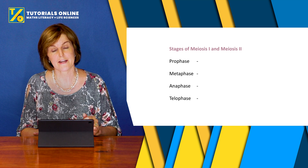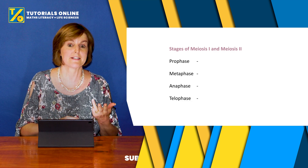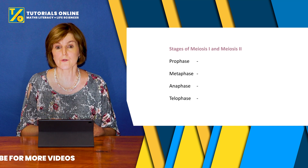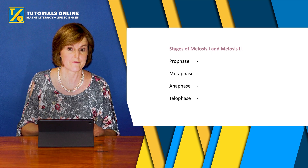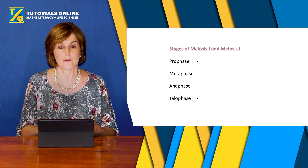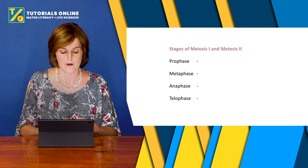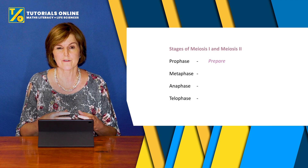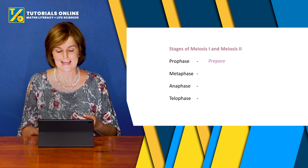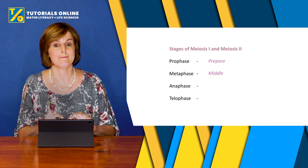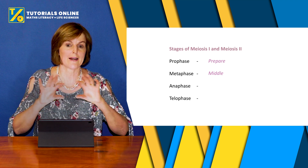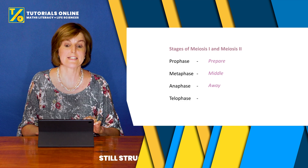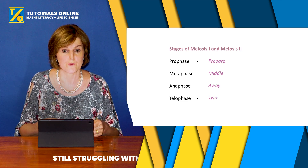Meiosis I has prophase I, metaphase I, anaphase I, and telophase I. Meiosis II likewise has prophase II, metaphase II, anaphase II, and telophase II. Prophase is the preparation stage in both. Metaphase — M for middle — the chromosomes line up on the equator. Anaphase — A for away — the chromosomes or chromatids move to opposite poles. Telophase is when one cell becomes two.